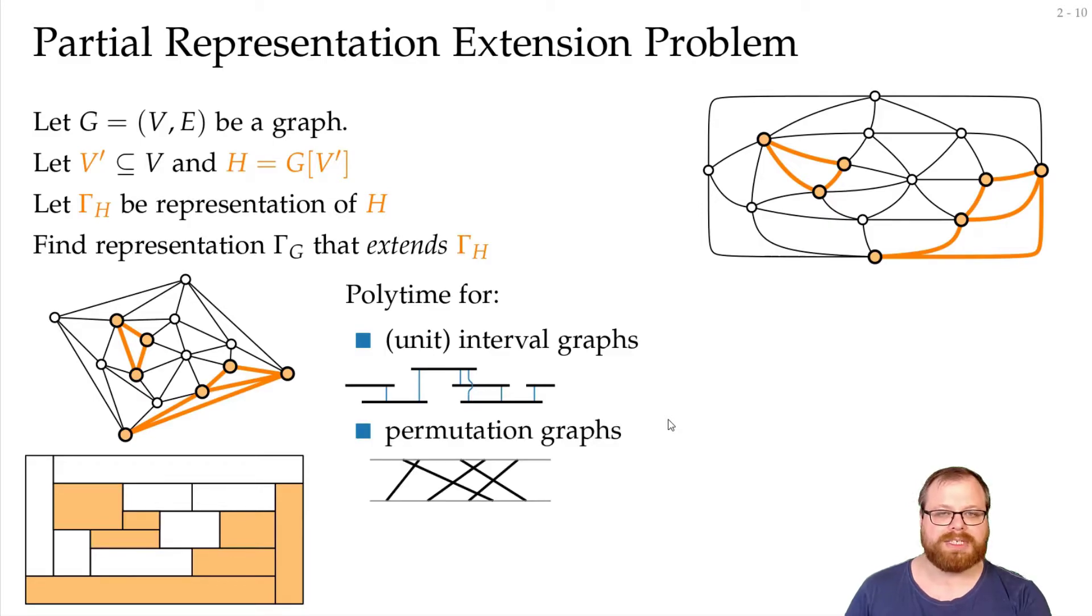It's also polynomial time solvable for permutation graphs. Here all the vertices are represented as a segment between two parallel lines. And this represents exactly all permutations that you can have on a sequence of numbers. It also works in polynomial time for circle graphs which are quite similar to permutation graphs. Here we have the intersection graph where every vertex is represented by a chord inside a circle.